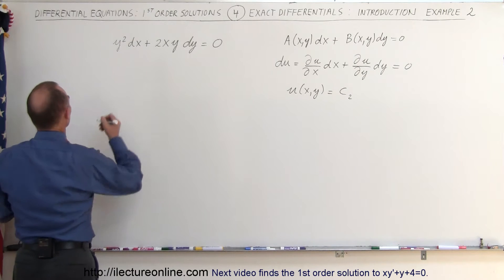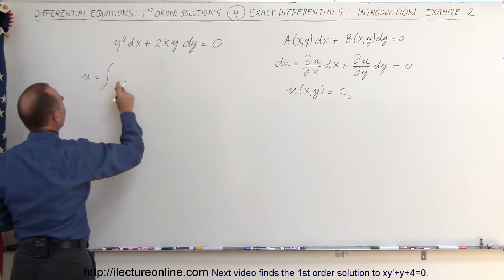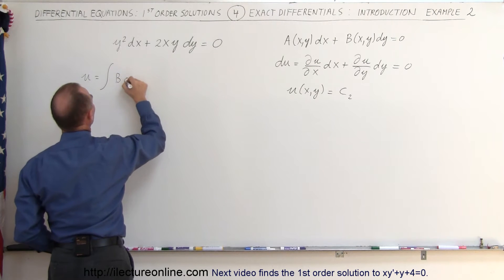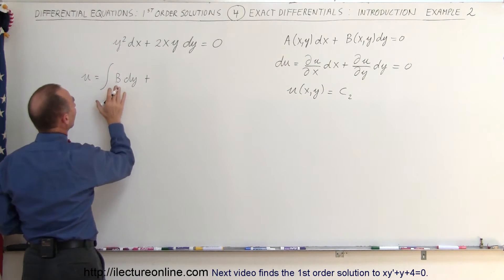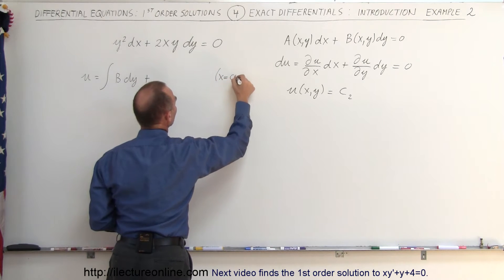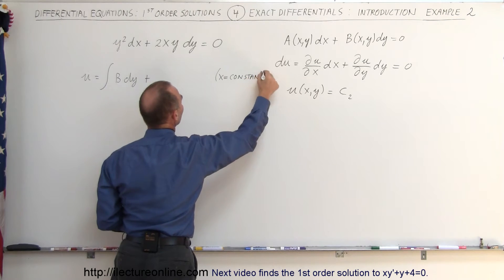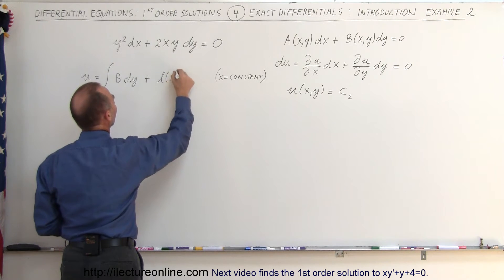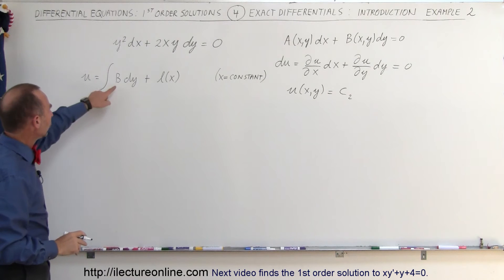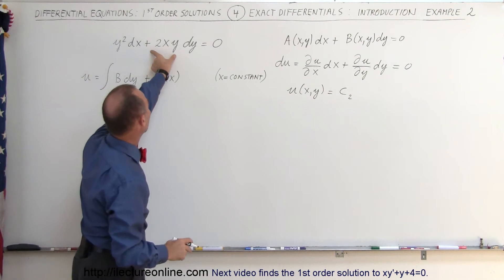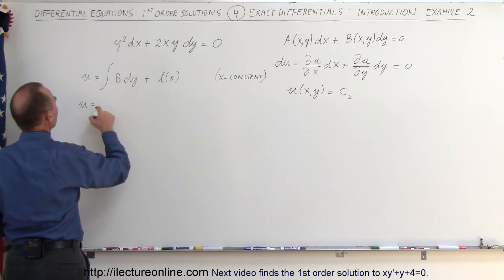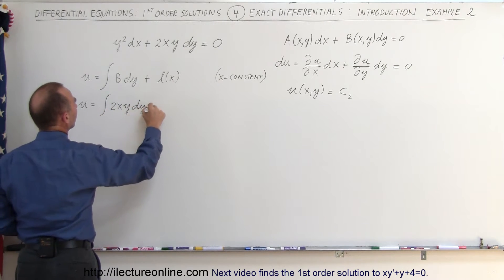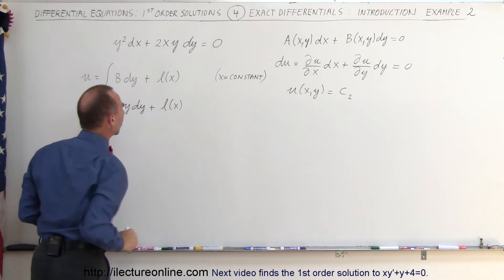To find u, we're going to take u equal to the integral and integrate the second portion of the equation — we integrate over B times dy, plus a constant of integration. When we integrate over B dy, x must be a constant, and if x is a constant, the constant of integration can be a function of x. So we write it as L of x. Since B is the second term 2xy, u is the integral of 2xy dy plus L of x, remembering that x is a constant.